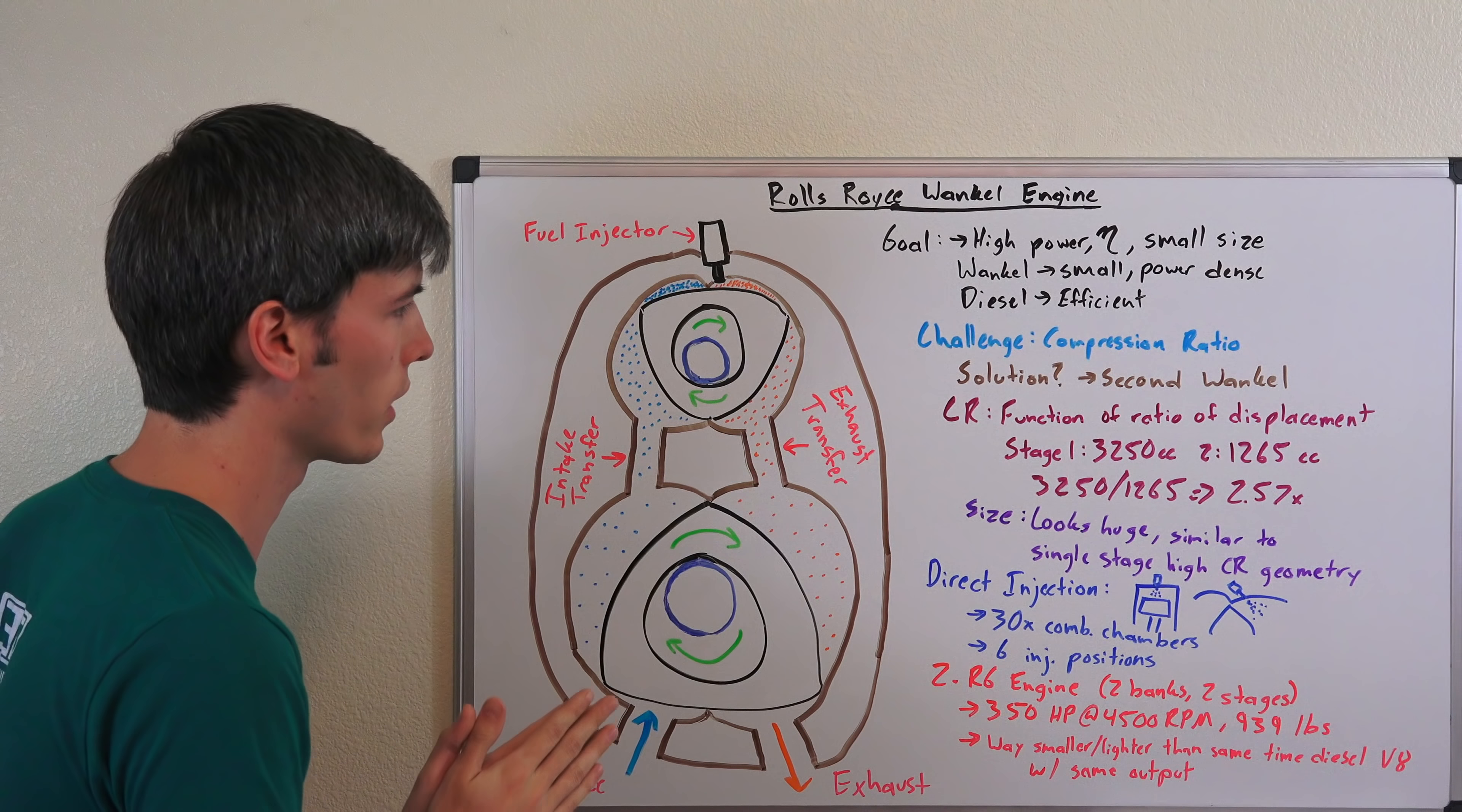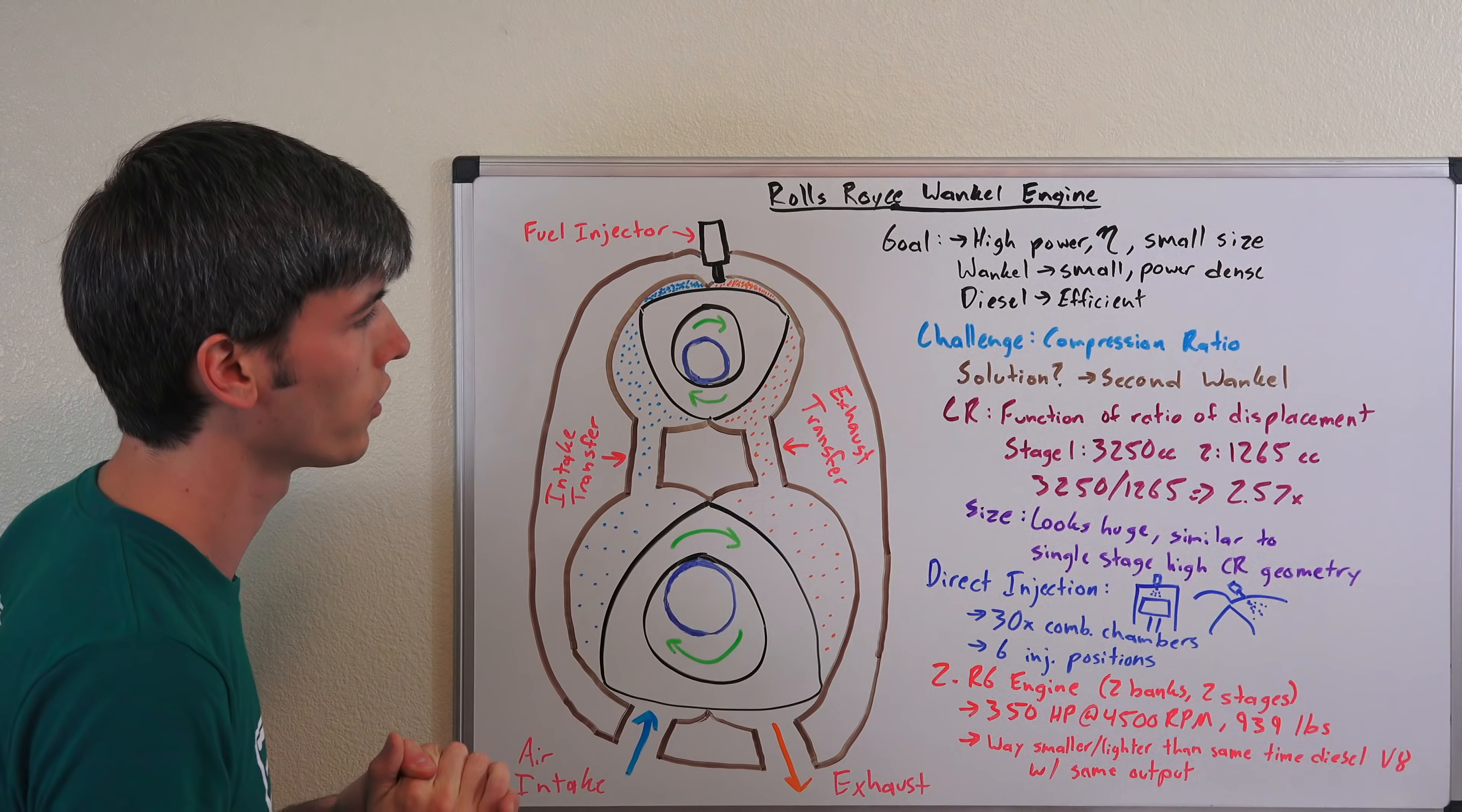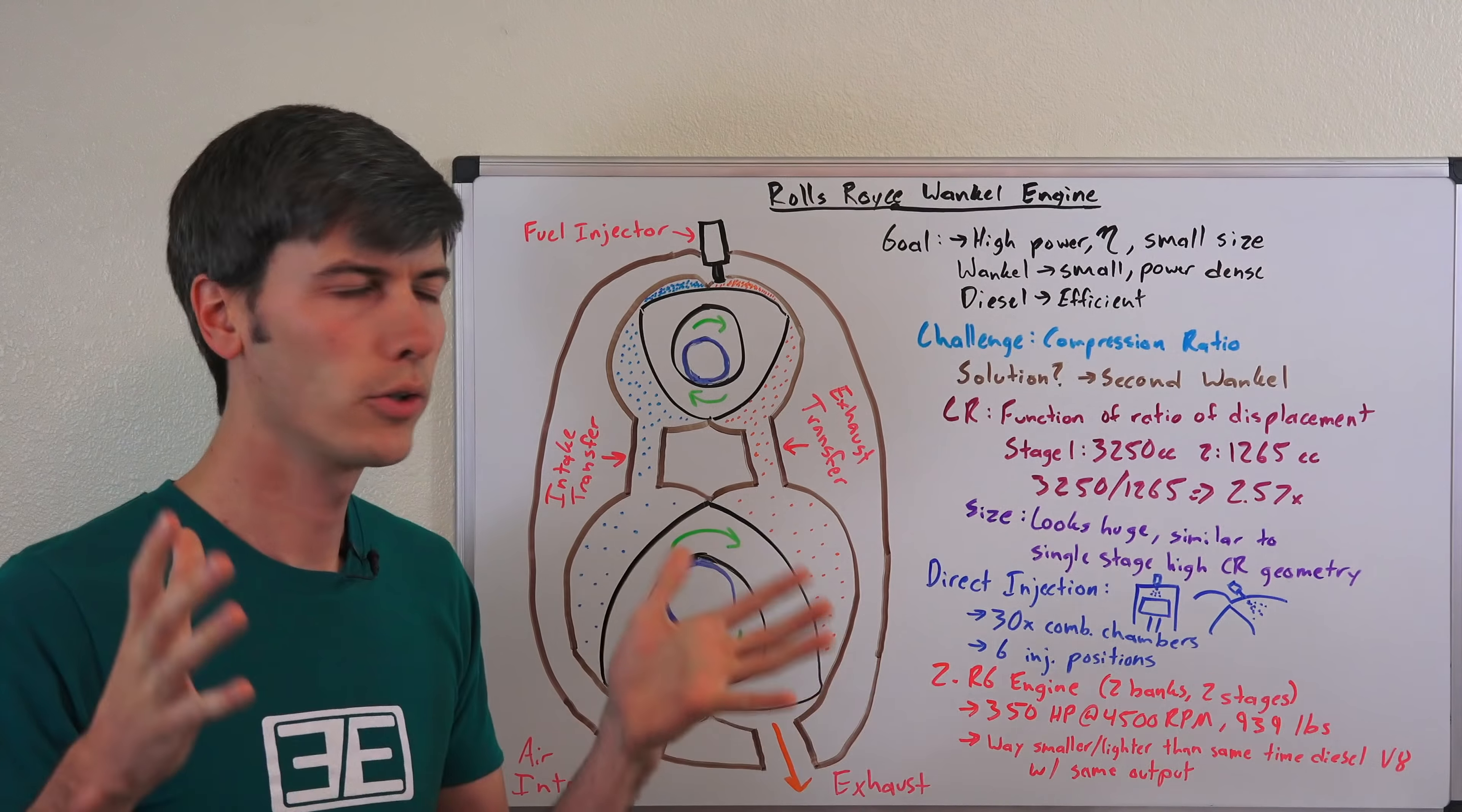Basically how this works is the ratio of the displacement of this rotary right here versus this one right here is going to give you your increase, a multiplier for your compression ratio. So this lower stage is 3250 cc cubic centimeters versus this upper stage is 1265 cc. You divide those two and that means your compression ratio is effectively being multiplied by 2.57.